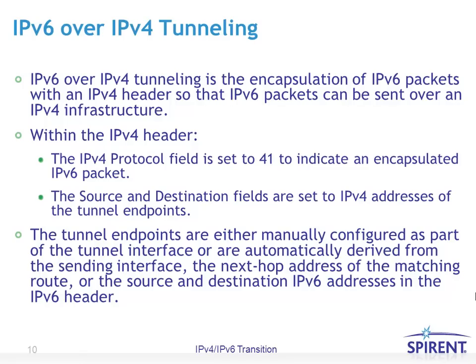Now that we've covered dual stack and the DNS infrastructure, we're going to take a closer look at tunneling. The idea of tunneling is to encapsulate IPv6 packets in IPv4 packets for transport over existing IPv4 intranets or even the global IPv4 internet. Today there is a lot of IPv6 traffic traversing the global IPv4 internet, though that is considered an interim solution. The IPv4 protocol field is set to 41, indicating that the next layer protocol is actually IPv6.